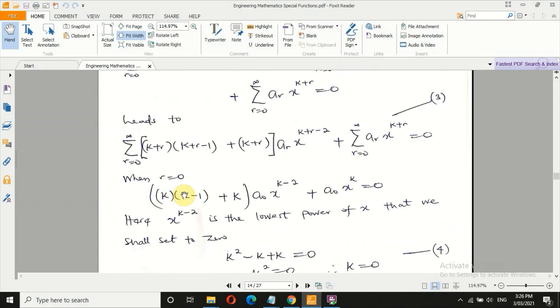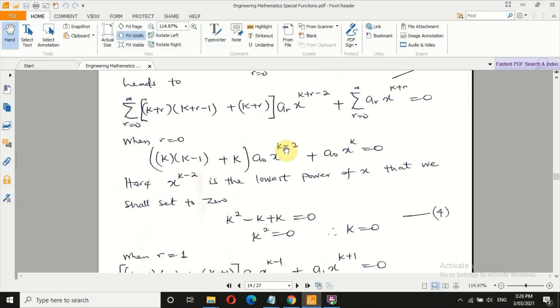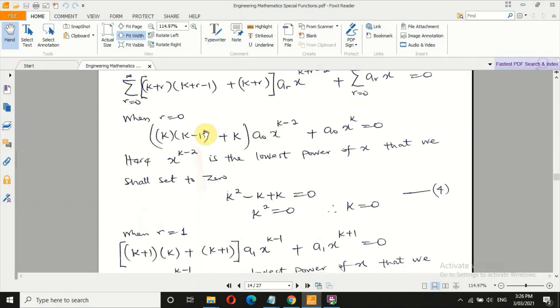From equation 3, let's start with when r equals 0. When r equals 0, you have 0 here, 0 here, that gives us k. This one gives k minus 1, this one gives k. Then we have a naught, x k minus 2, and a naught x raised to power k equals 0. Look at the coefficient: this one is k minus 2, this one is k. Which one is the lowest power of x? This is the lowest power. We take the coefficient equals 0. This gives: expand this, k times k is k squared, then minus k plus k equals 0. From minus k, we take care of k, then k equals 0. Our k is 0. Let's call this equation 4.